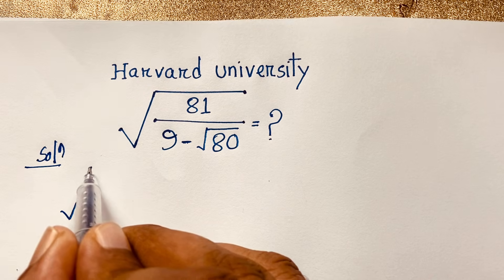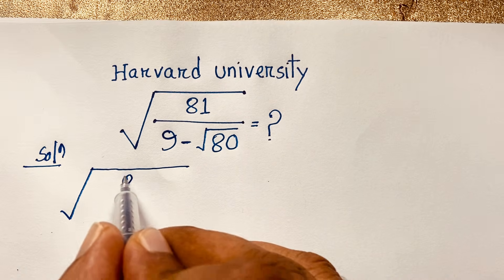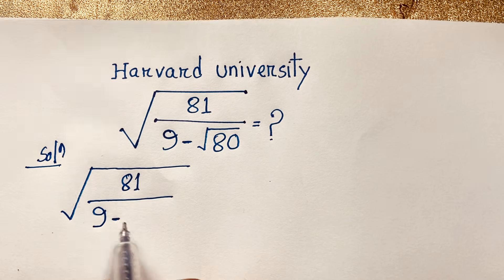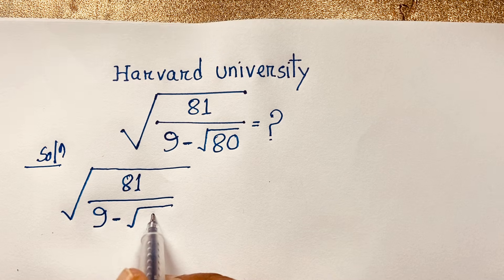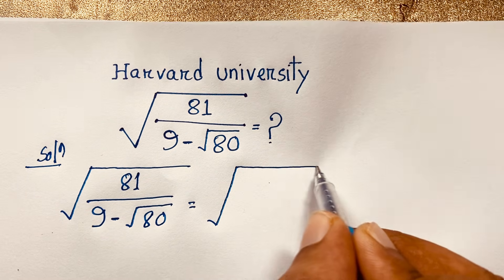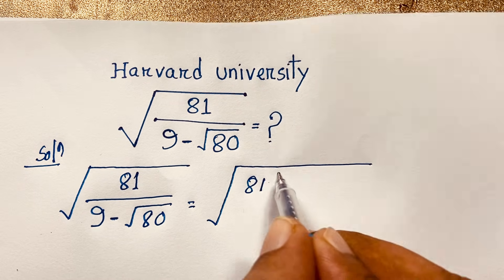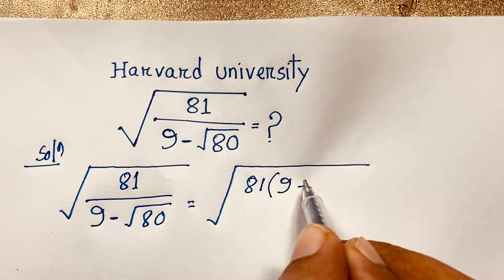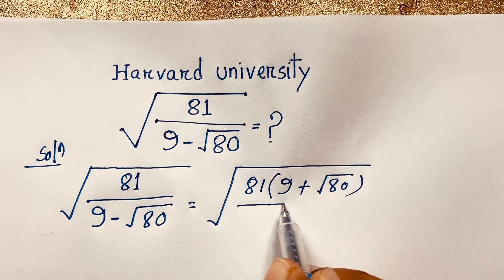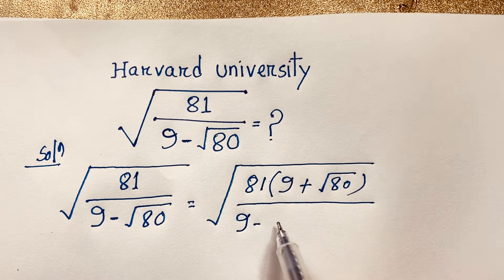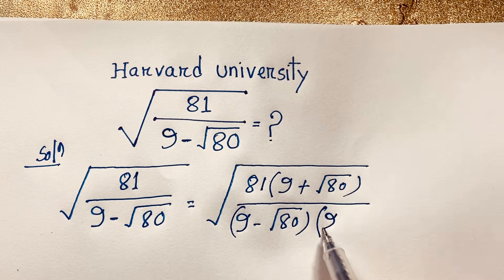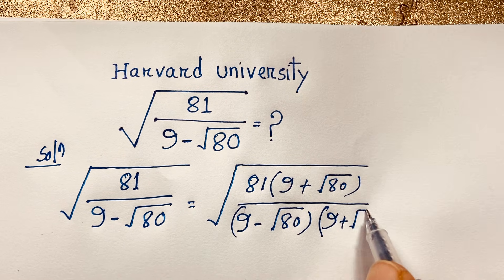So we have square root of 81 over 9 minus square root 80. At this point, we multiply by the conjugate: square root 81 times (9 plus square root 80) over (9 minus square root 80) times (9 plus square root 80).